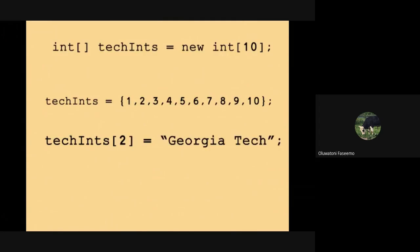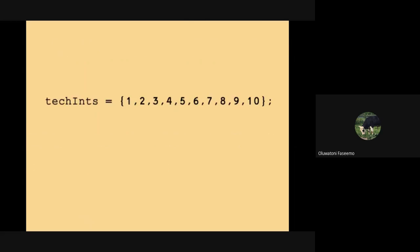For example, you couldn't store the string 'Georgia Tech' in an array of integers. To access a value at a certain point in an array, you use an index, which tells Java where that point is. It's important to remember that arrays start at index zero, not one, so be careful when choosing which item you want to access.